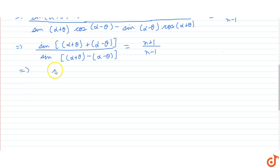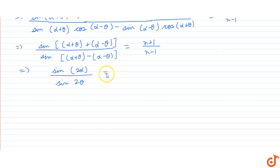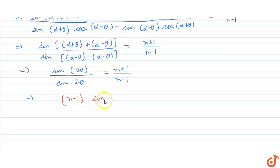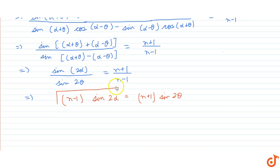Further simplifying, we get sin2α / sin2θ = (n + 1)/(n - 1), which implies that (n - 1)·sin2α = (n + 1)·sin2θ. This is exactly what we had to prove in this question.